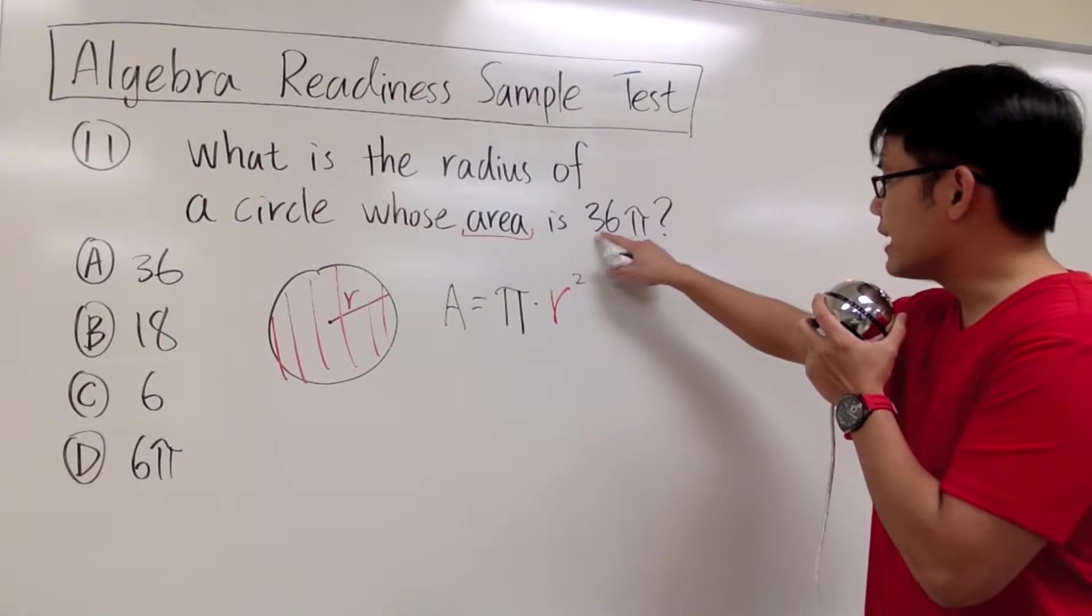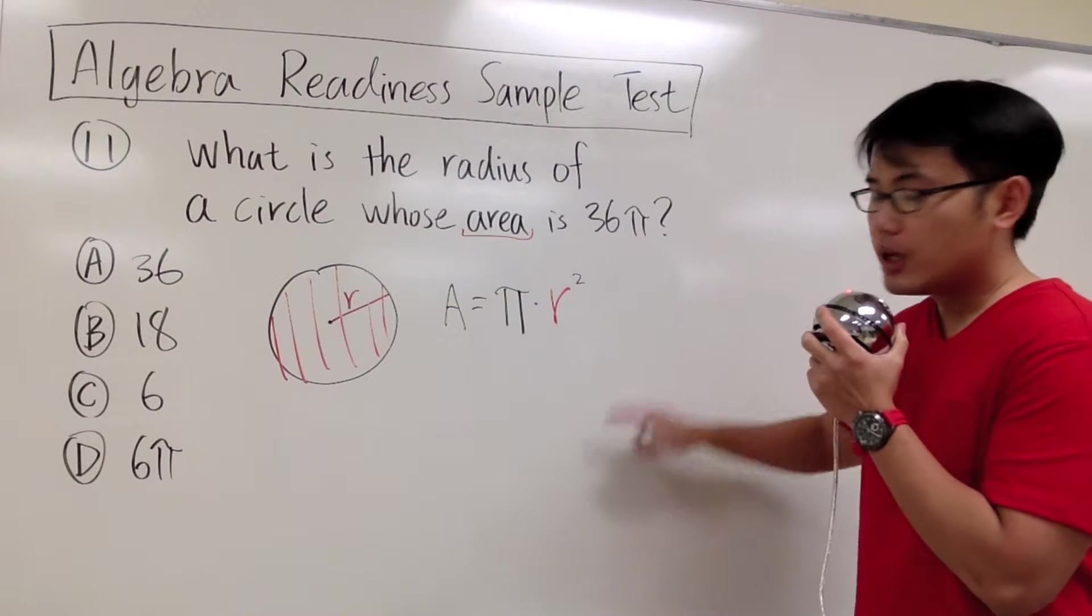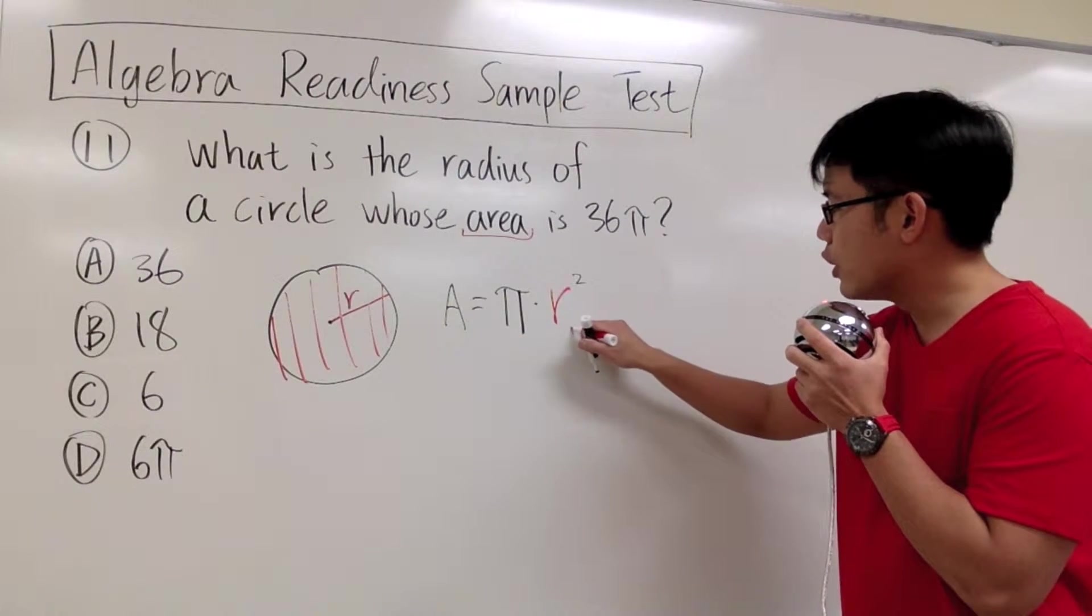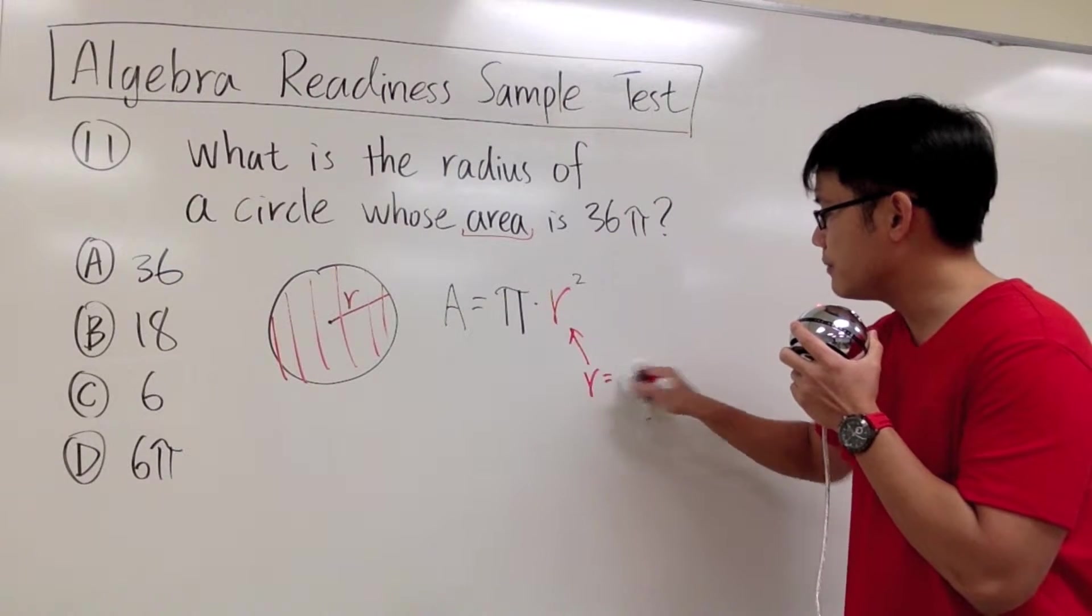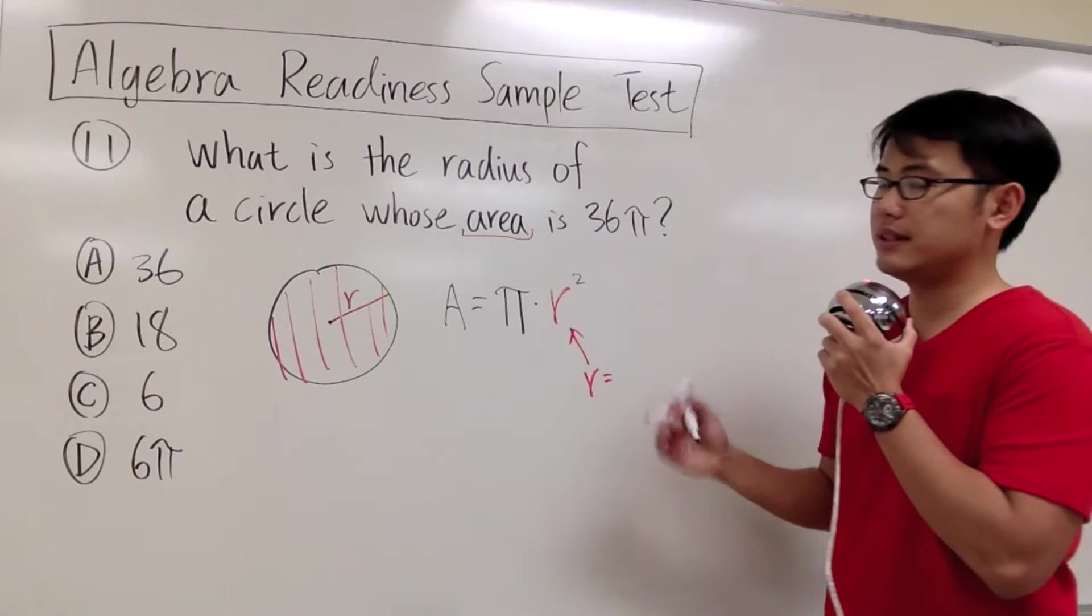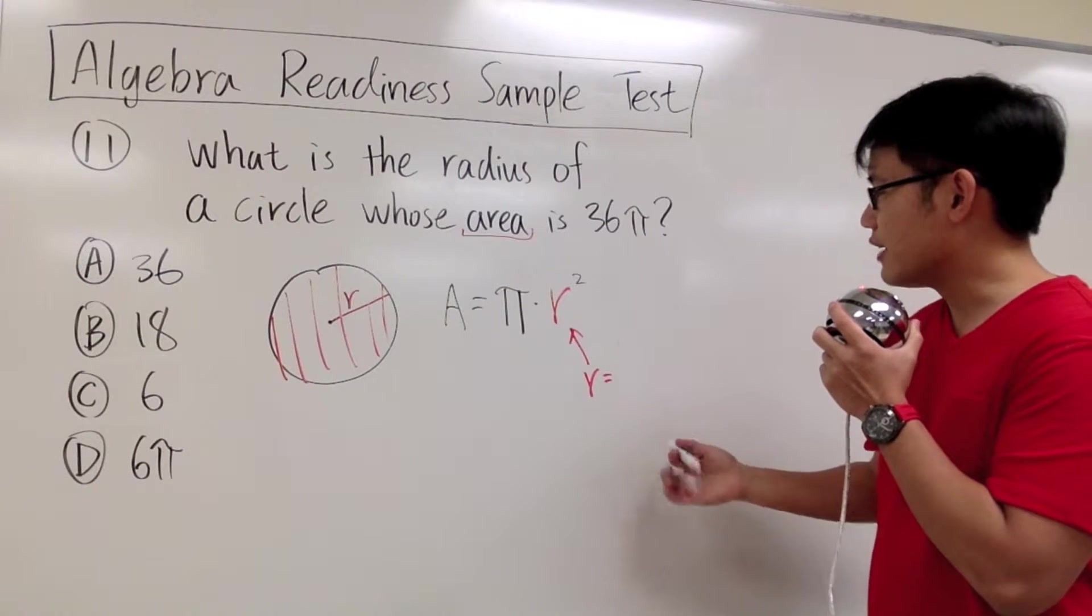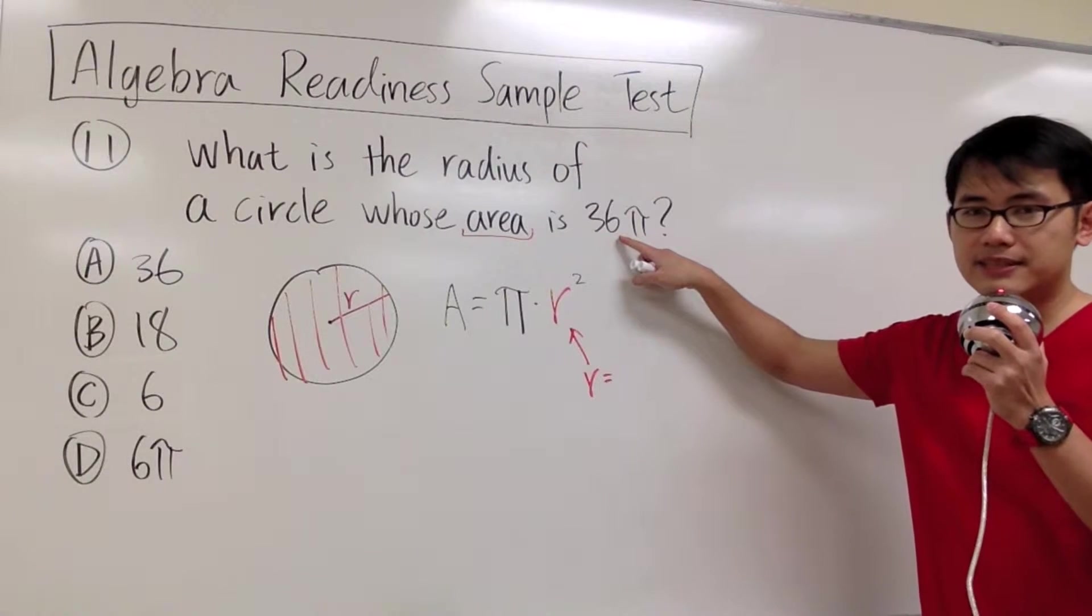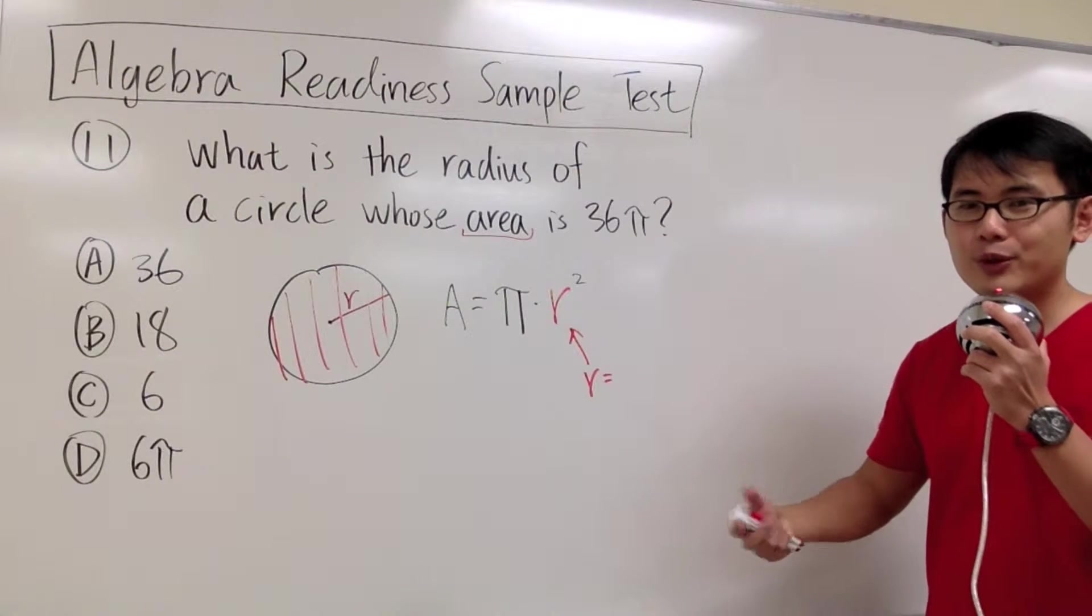We know that we're trying to get 36π. You see the formula has the π already, now you just have to figure out what r should be. And that's the question, isn't it? And then you just have to ask yourself, what number to the second power will give you 36? What times itself will give you 36?